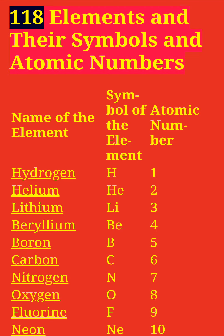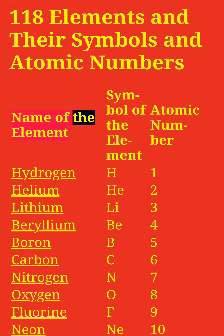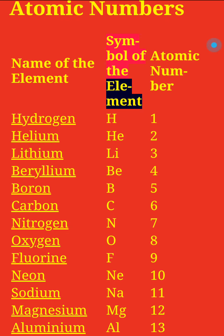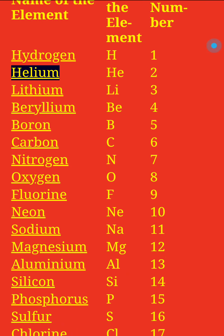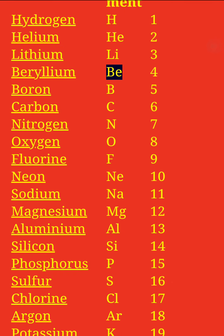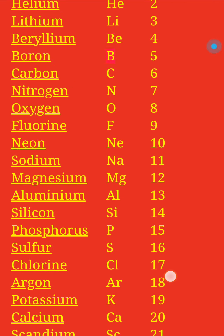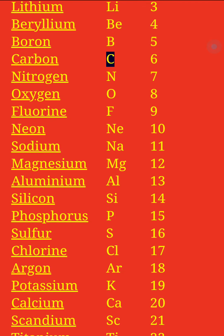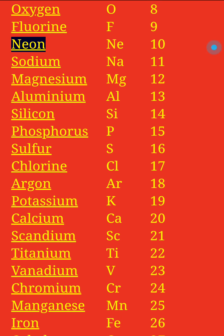118 elements and their symbols and atomic numbers. Name of the element, symbol of the element, atomic number. Hydrogen H 1, Helium 2, Lithium 3, Beryllium 4, Boron 5, Carbon 6, Nitrogen 7, Oxygen 8, Fluorine 9, Neon 10, Sodium Na 11.